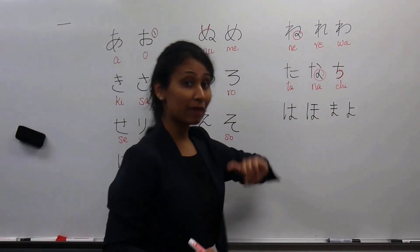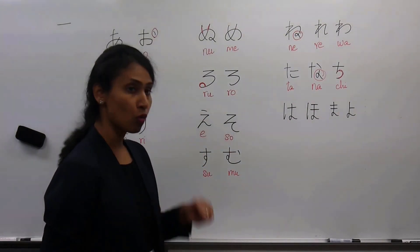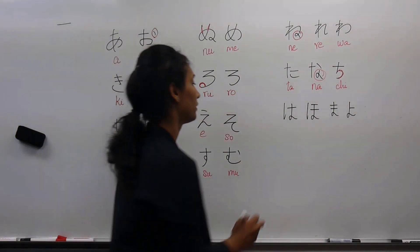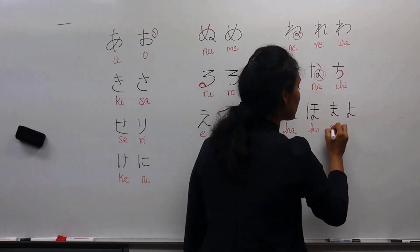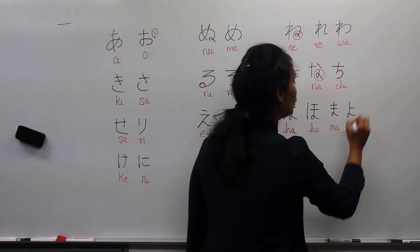This is the 'L' series. I have already covered this though still repeating it here. This one is 'ha,' this is 'ho,' this is 'ma,' and 'yo.'